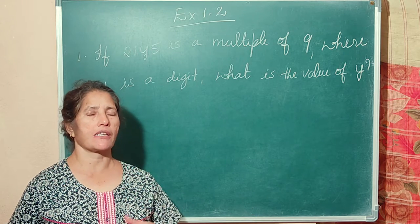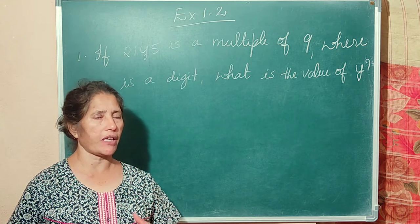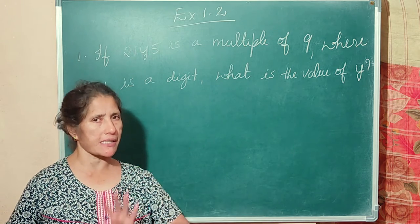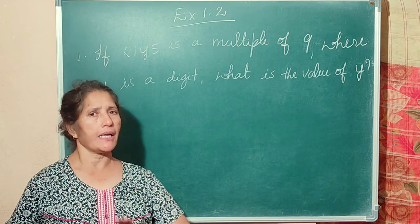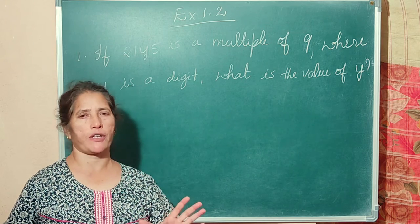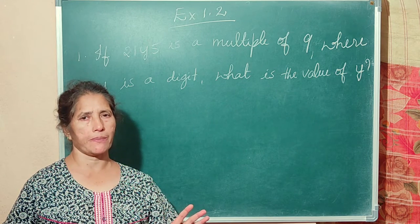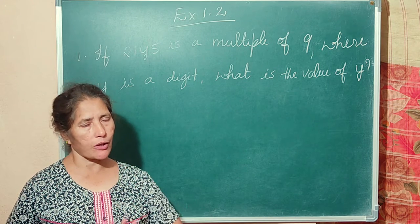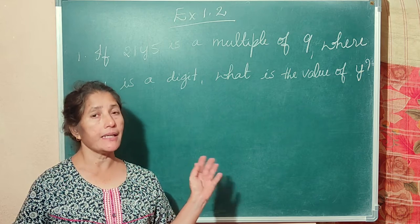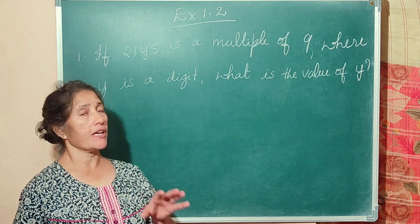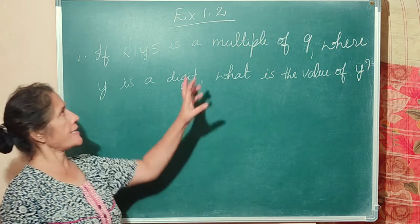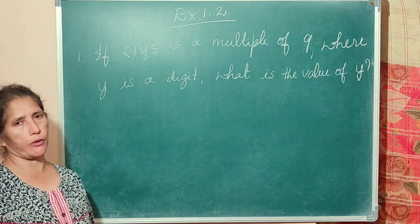The number is divisible by 11 if you take the alternate digits, find their sums, and the difference of those sums is 0 or a multiple of 11. Now let us do exercise 1.2.